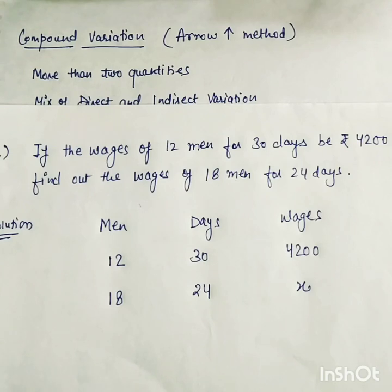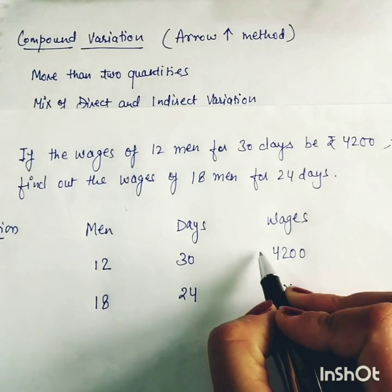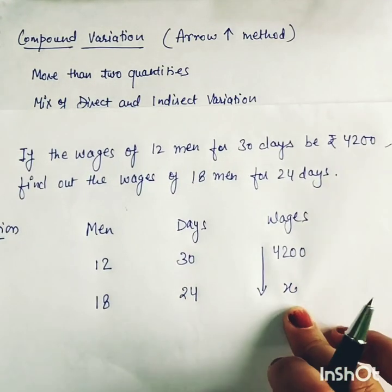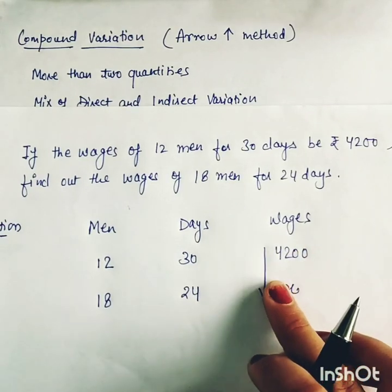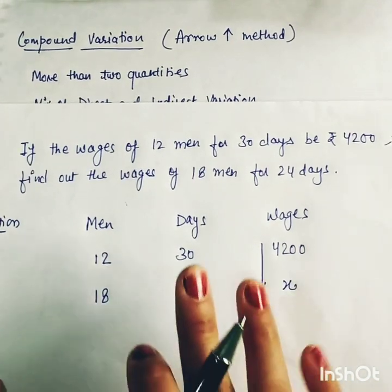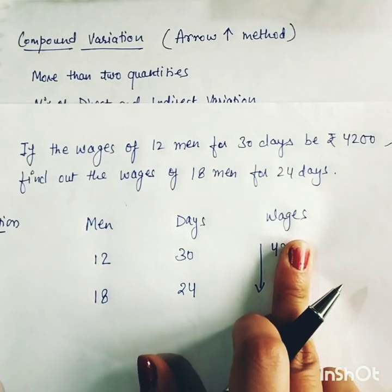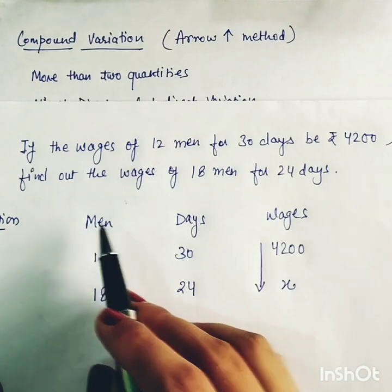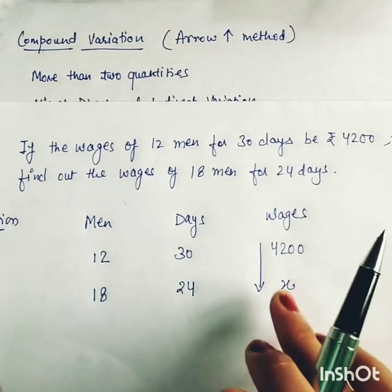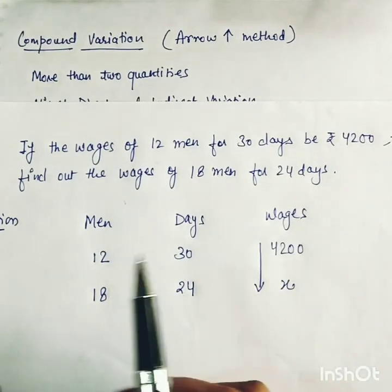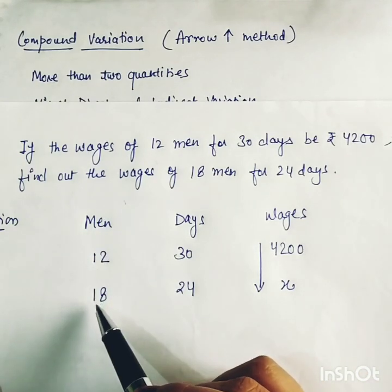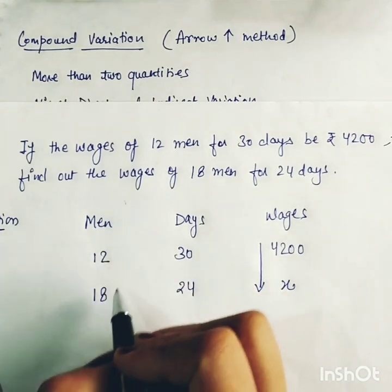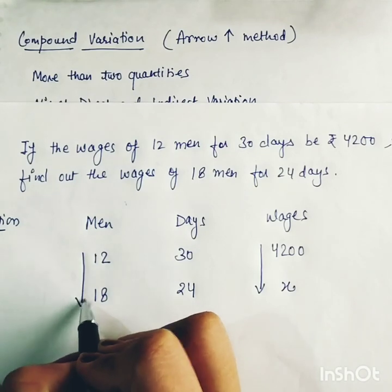In the second step, we compare the other quantities to the unknown quantity one by one. When we compare men and wages: 12 men's wages are 4200, so 18 men's wages will be more — because the number of men increased, wages increase. So the biggest digit is our arrow pointer. Between 12 and 18, 18 is the biggest digit, so 18 will be our arrow pointer.